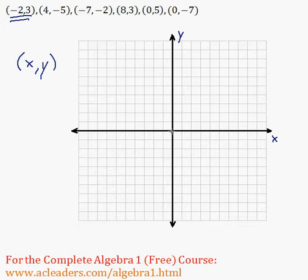If we have negative 2 for x, we need to go to the left by 2 units. y is positive 3, so we're going to go up by 3 units. So right here, that's our point, negative 2 by 3.